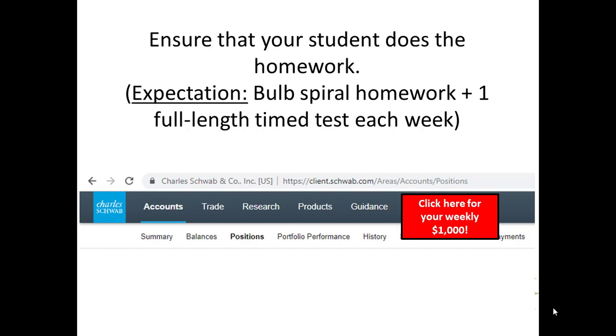Now, back to the homework completion. The homework expectation is to do the homework in the bulb spiral book that we wrote as a company. That is a smaller amount of homework, usually 20 or so minutes a week in the spiral book. And then there's one full length timed test that is assigned each week. So it takes about three hours to take and another hour to do and review if you're doing 100% of the assigned homework.